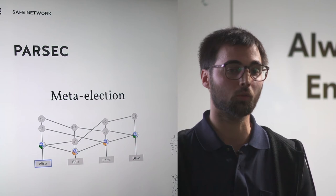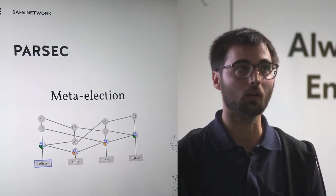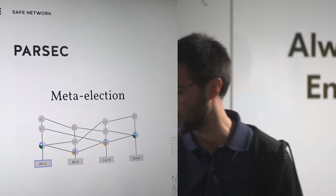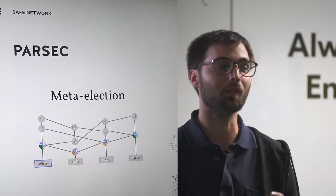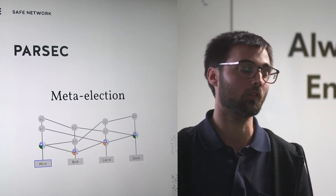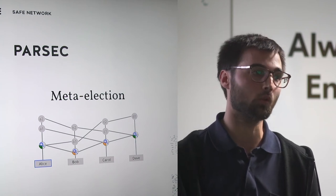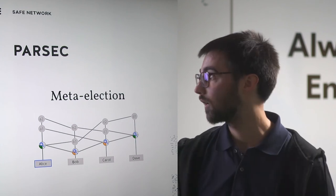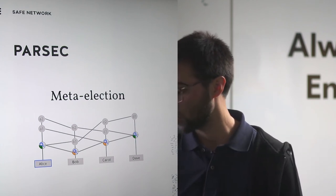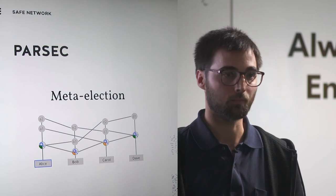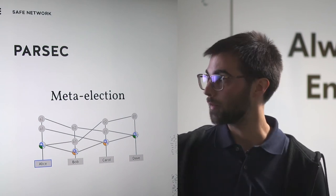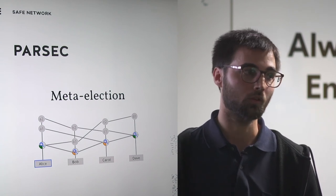That solution is by Mostefari and Reynold, in a paper called "signature-free asynchronous Byzantine consensus with t lower than n divided by 3, and order of n squared messages." The n squared messages is because they do it in the context of broadcast, but we port everything to gossip, which means for us it's n log n. One key part of this paper is filtering out binary values proposed by malicious nodes — that's a process called binary value gossip.